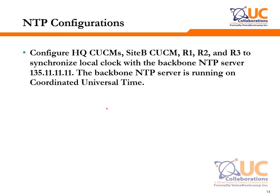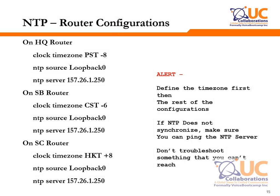You are required to configure NTP on the HQ router, Call Manager, Site B Call Manager, and R1, R2, R3 routers to synchronize their local clocks with the backbone NTP server, which runs in Coordinated Universal Time (UTC). On the HQ router, define the time zone — for example, 'clock timezone PST -8' — define the source loopback address, and specify the NTP server IP address. You may also need to configure summer time, for example 'clock summer-time PDT recurring'.